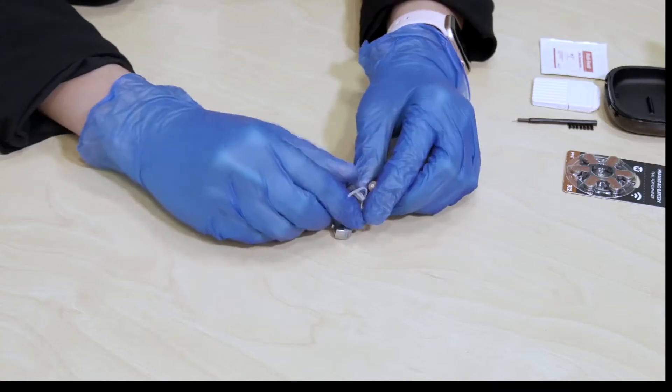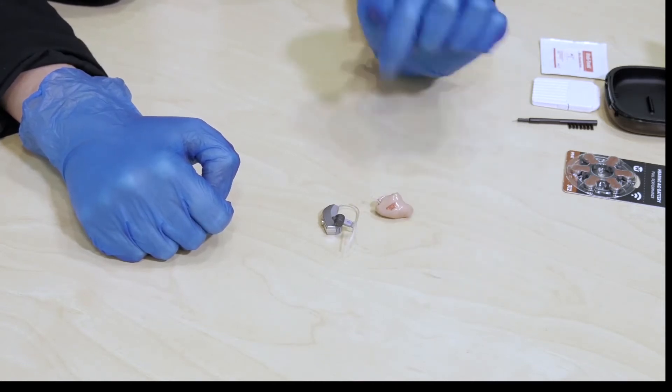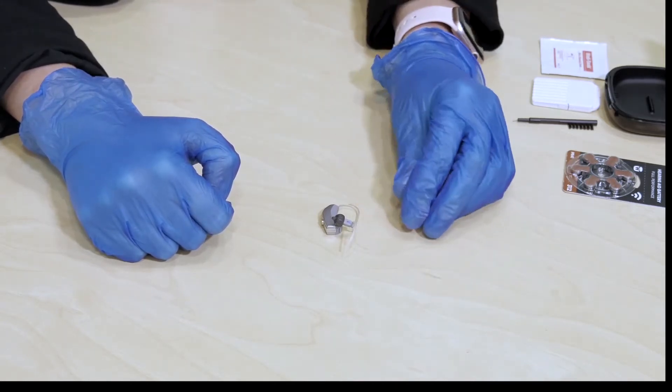A couple of things to troubleshoot if the hearing aid's not working. First thing to do would be to try and put a new battery in. So I'm just going to do it with the two main types of hearing aids that we have. One is this type that sits behind the ear and one is the more custom one that sits completely inside the ear.